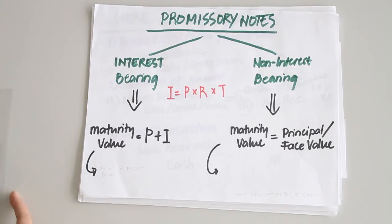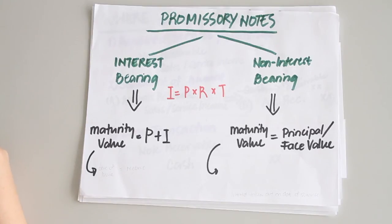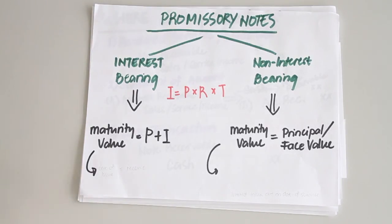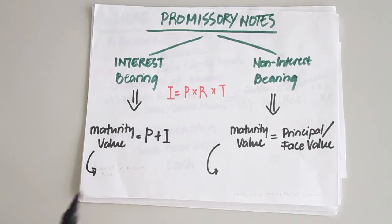The difference between interest bearing and non-interest bearing notes lies in two things: the amount of proceeds received on the date of issuance, and the amount to be paid on the maturity date. For interest bearing notes, proceeds received on the transaction date equal the face value of the note, while the maturity value equals the principal plus interest.